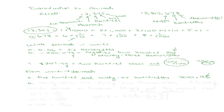Let's try another one: thirty-nine and forty-two thousandths. What is before the decimal point? Thirty-nine. The 'and' is the decimal point. Then we write zero four two — that zero must be there, otherwise the two would not be in the thousandths place.